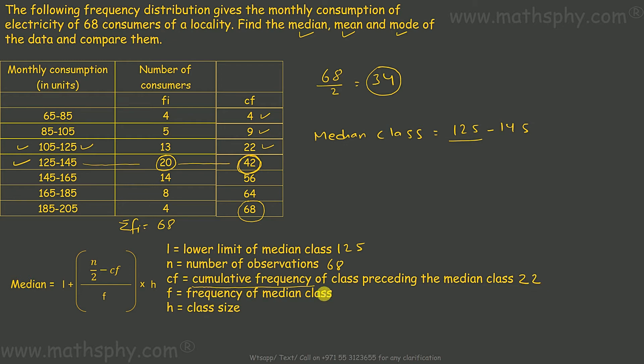So cumulative frequency of class preceding the median class would be 22. Frequency of median class F is 20, not the cumulative frequency. Class size H is 20, 145 minus 125 equals 20, standard everywhere. Now we have all the inputs.